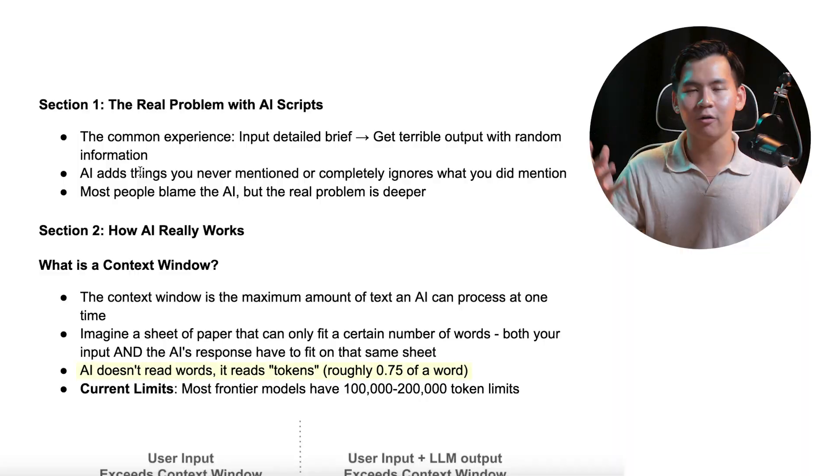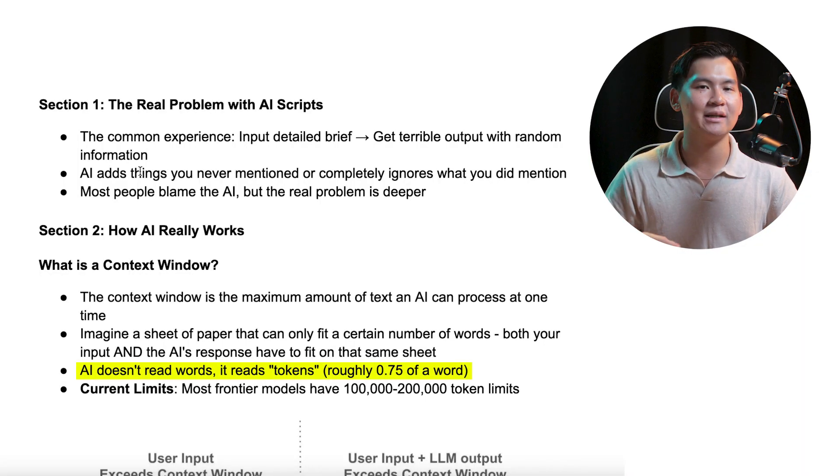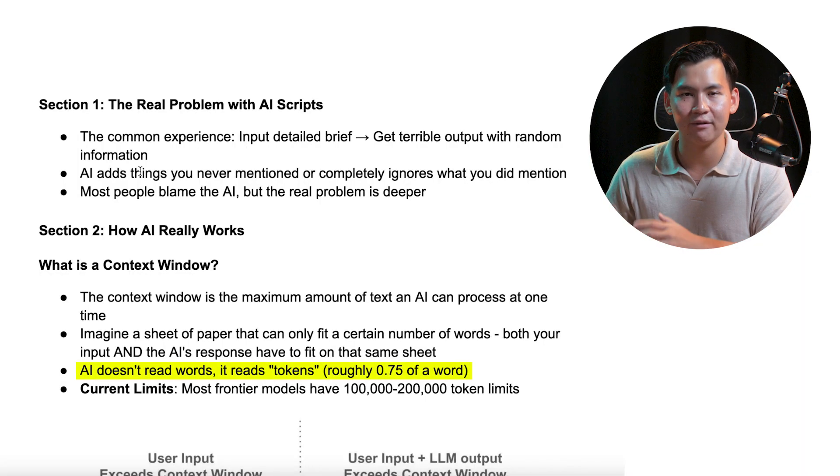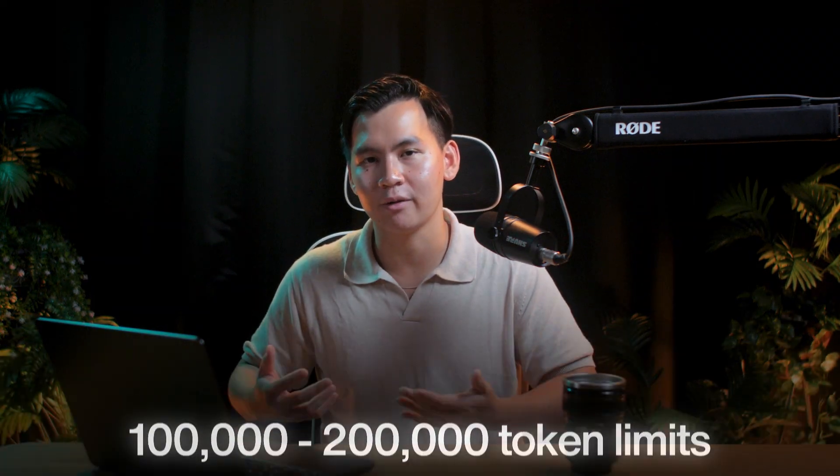Most people think that AI thinks in terms of words, but AI actually thinks in terms of tokens. Tokens roughly translate to 0.75 words. And the limits for most AI models out there right now is 100,000 to 200,000 tokens. If you do the math, 200,000 tokens translates to about 150,000 words. 150,000 words sounds like a lot, but it isn't actually that much.